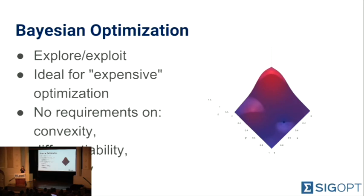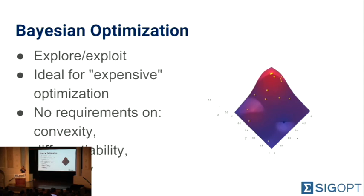At SigOpt, we recommend using Bayesian optimization — we think it's the way to go for hyperparameter optimization, and our API wraps an ensemble of Bayesian optimization techniques. Bayesian optimization offers an ideal balance of exploring your hyperparameter space and exploiting when a good point has been found. It is ideally suited for expensive-to-evaluate problems, and evaluating a machine learning model qualifies — by expensive I mean minutes, hours, or days, which is the length of time it may take to train a model. Additionally, hyperparameter spaces may be non-convex, non-continuous, and non-differentiable, and Bayesian optimization makes no requirements on those properties from your space.